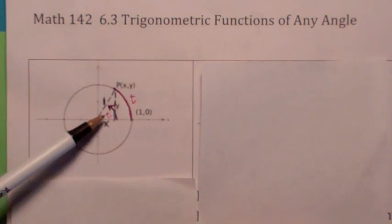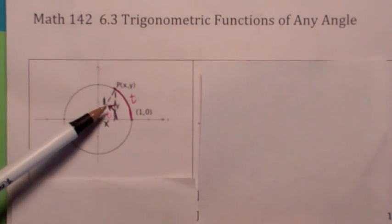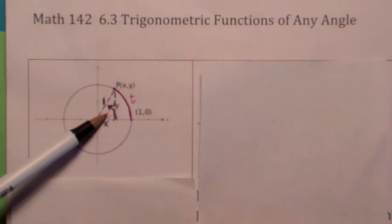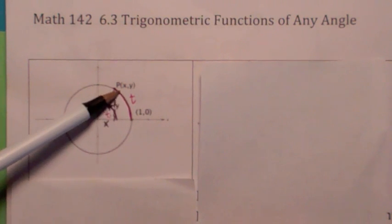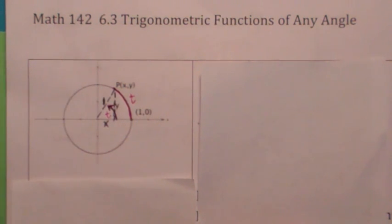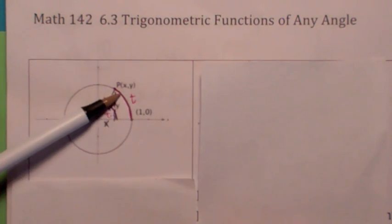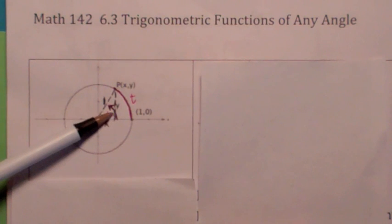Then when we started talking about angles, we defined radian measure. What's so nice about the unit circle is that if you're on the unit circle, the radian measure of the central angle in radians equals the distance that you move around the unit circle. That's important because it ties together trig functions of a real number t with trig functions of an angle.